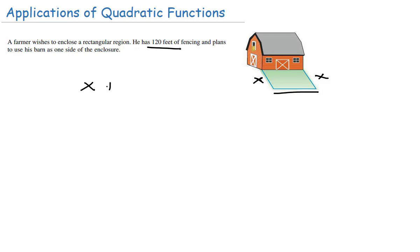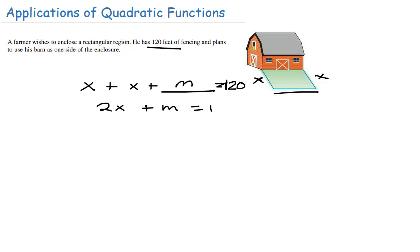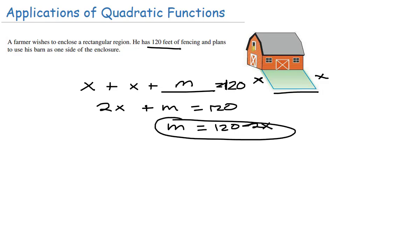We know that one side plus the other side of fencing plus the missing side can equal 120 feet. So we want to basically solve for this missing part — let's call it m. We have 2x plus m equals 120. If we subtract 2x from both sides, we get m equals 120 minus 2x. So the other side of the fencing is 120 feet minus 2 times x.